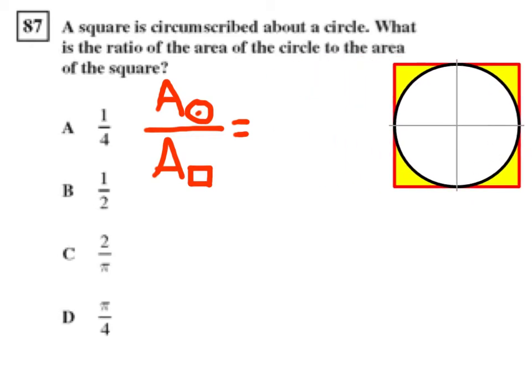Here we have a circle. The area of the circle is in white here. And we have a square. The area of the square is equal to the area of the white part that's inside the circle added to the yellow area that's outside the circle but inside the square. So we want to find out what the ratio is of the white area to the sum of the white and yellow areas.